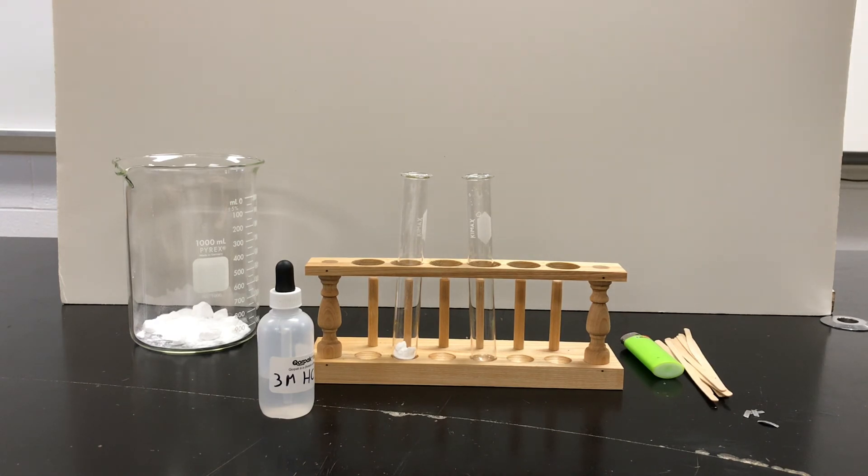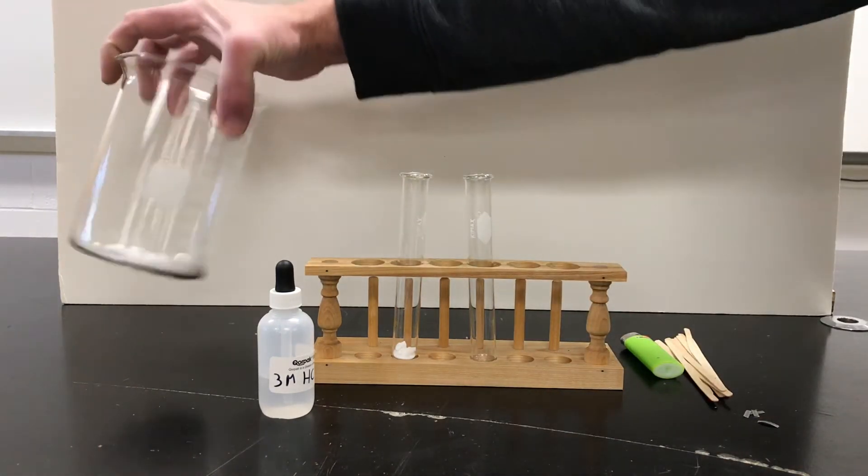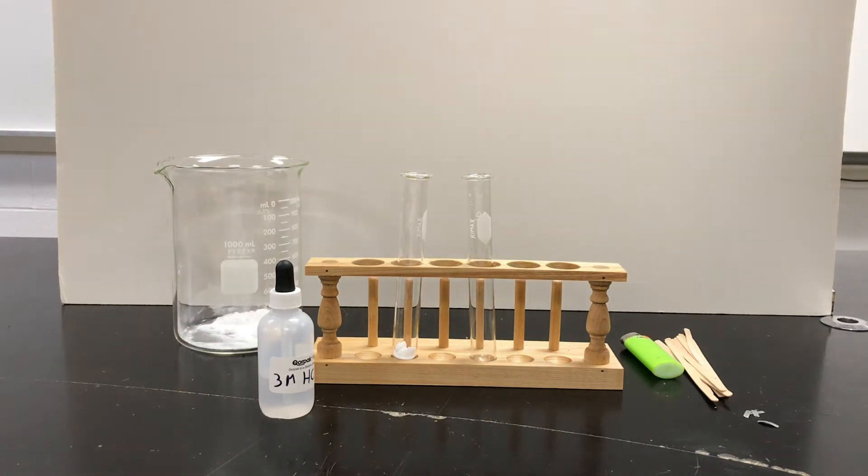When we use acid a lot of times in chemistry class we have baking soda on the sideline, sodium bicarbonate. The reason we do is because baking soda neutralizes acid. It does a great job at it, and when that chemical reaction happens there's a set of products that are given off and it's very easy to tell what's going on with the reaction. So let's show you that.